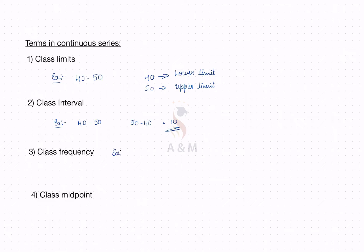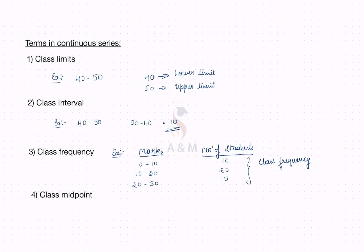For example, marks and the number of students: the marks are from 0 to 10, 10 to 20, and 20 to 30. Suppose the number of students is 10, 20, 15. Here, the number of students is nothing but the class frequency. The marks — 0 to 10, 10 to 20, 20 to 30 — is nothing but the continuous variable.